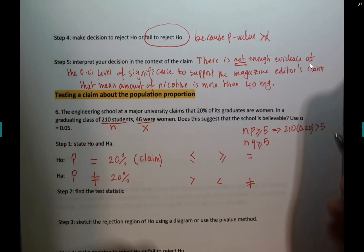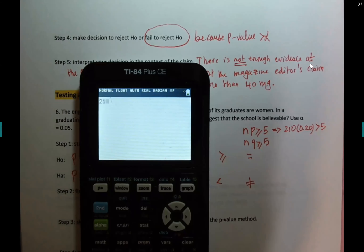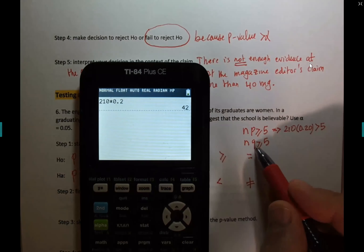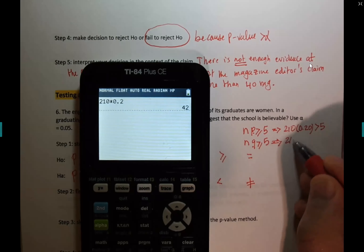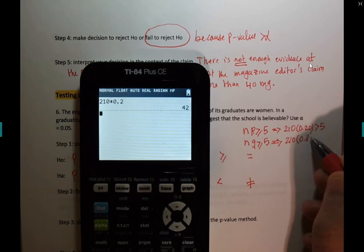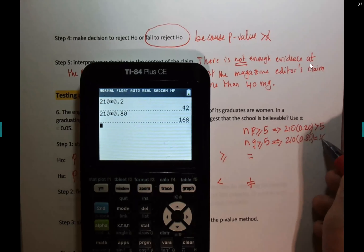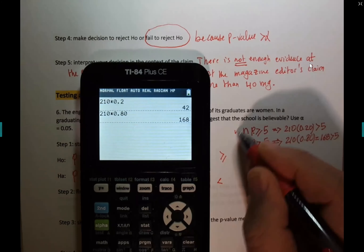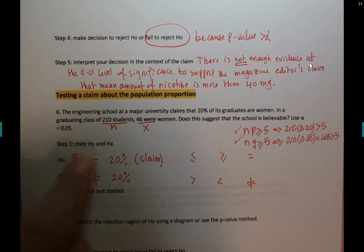q is the opposite of p — q is 1 − p, so if p = 0.20 then q = 0.80. And 210 × 0.80 = 168, which is definitely bigger than 5. Both conditions are satisfied, so we can proceed with the test. p = 0.20, p ≠ 0.20.